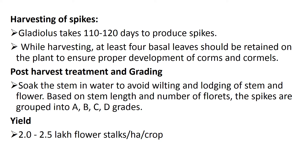For post-harvest treatment and grading, the main market demand for ornamental flowers is freshness. After harvesting, soak the stems in water to avoid wilting. Grade the flowers on the basis of stem length, number of florets, and spikes. Finally, the yield is 2 to 2.5 lakh flower stalks per hectare per crop. Gladiolus is a very famous flower available on platforms like Flipkart and Amazon.